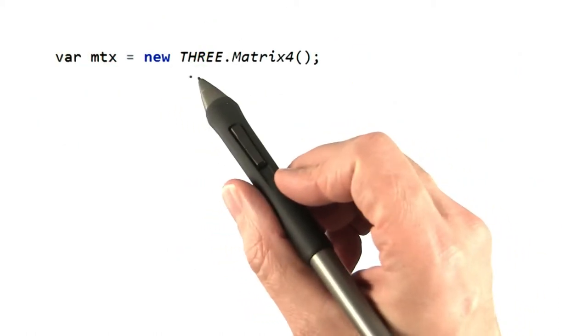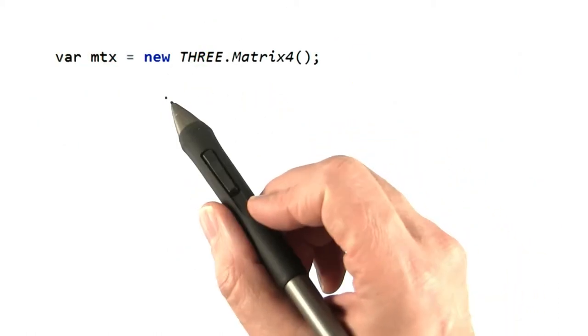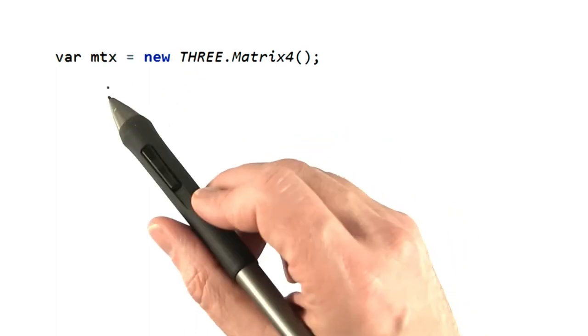In THREE.js, we create a matrix 4 by this bit of code. By default, this matrix is the identity matrix.